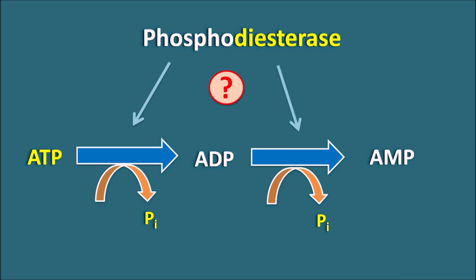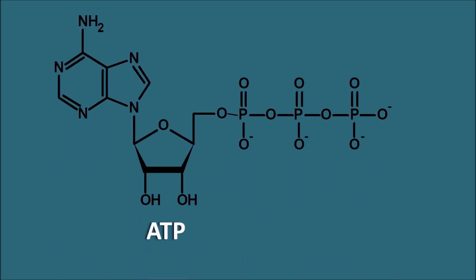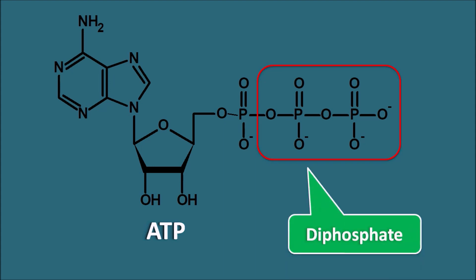We should not confuse here. Phosphodiesterases are not acting on the dephosphorylation of ATP or ADP. In the structure of ATP, we can observe a triphosphate bond, and at the terminal the diphosphate group is attached with the monophosphate, which can be cleaved and released from the ATP. So ATP is not a diester but a triphosphate with a terminal diphosphate linkage, which is not cleaved by phosphodiesterases.